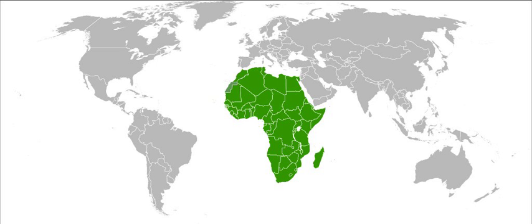Spain's enclaves of Ceuta and Melilla are surrounded by Morocco. Spanish Sahara was a province at the time, to the south. Equatorial Guinea was also a province, bordering Cameroon to the north and Gabon to the east and south. Zambia, a colony of the United Kingdom at the time, joined the OAU in October 1965, after gaining independence on October 24 the year prior. The Democratic Republic of the Congo and Tanzania lie to the north.